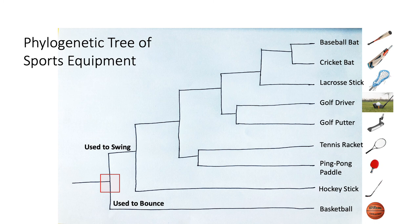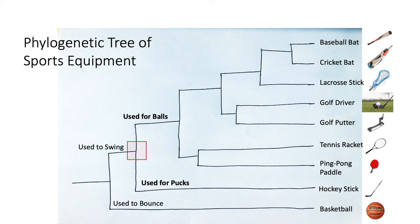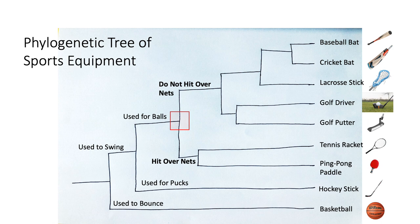The first divergence occurred because the outgroup — basketball — differed from the other OTUs in that basketball is used to bounce, while the other OTUs are used to swing. Next, the hockey stick diverged because it is used for pucks, while the other equipment is used for balls.